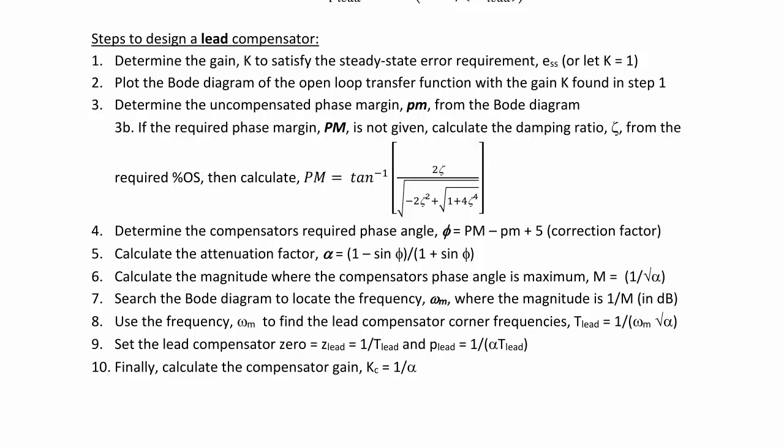Next, calculate the attenuation factor α = (1 - sin φ) / (1 + sin φ) and then calculate the magnitude criterion where the compensator's phase angle maximum is at 1 / √α. You now search the Bode diagram to locate the frequency ω_max where the magnitude is 1/m in decibels and use that frequency to find the lead compensator corner frequencies knowing that t_lead = 1 / (√ω_m · √α). You then set the lead compensator zero z_lead = 1/t_lead and p_lead = 1/(α·t_lead).